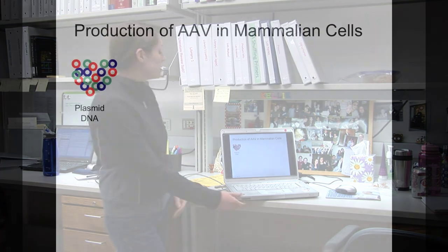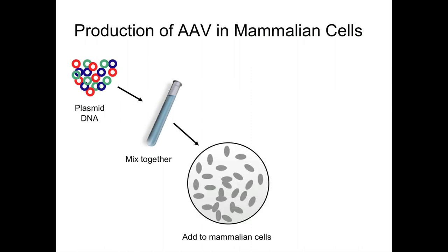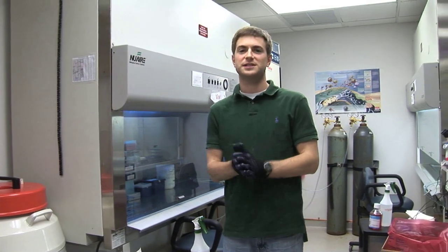Now that we've purified and analyzed our plasmids, we can use them to actually make our virus. We start off with our three plasmids, add them together, and apply them to our specialized mammalian cells. These mammalian cells serve as virus factories for us, and after a period of time we lyse them and harvest our virus for other applications.